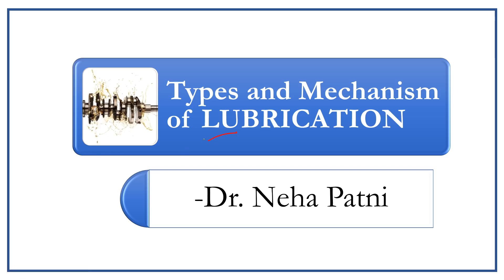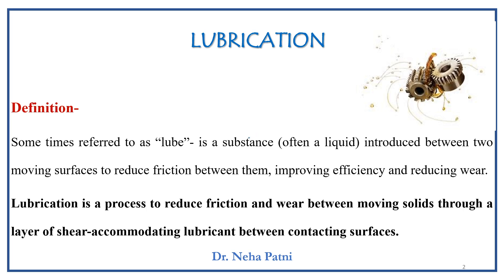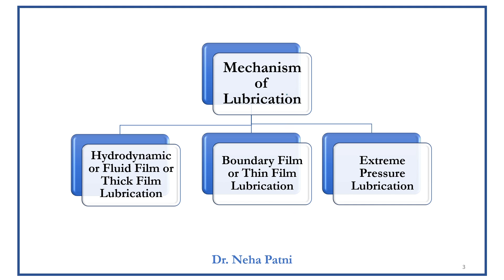Many of you were putting comments requesting a PPT on lubrication, so here I am. Today we are going to discuss types and mechanism of lubrication. Hello everyone, I am Neha. In the playlist on lubricants we have already discussed what is the meaning of lubricant — a lubricant or lube is basically a substance which reduces friction. That process of reducing friction is known as lubrication, wherein the lubricant reduces friction and reduces the wear and tear of the machine.